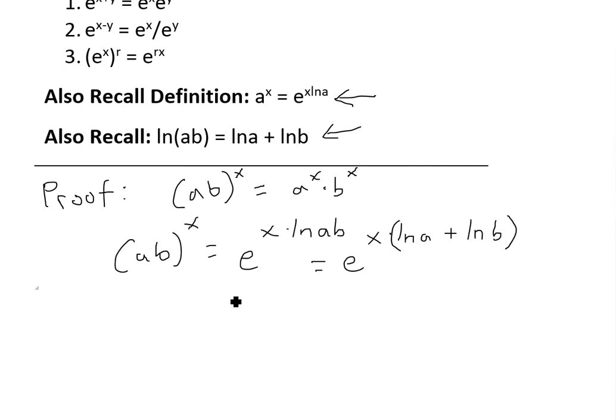Now if we multiply this inside, we'll get e to the power of x ln a, just multiply the x inside there, then plus x ln b. So now that we've got it in this form, we can apply this law right here.